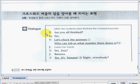Are you all finished? Students, yes. Teacher, let's check the answers. Who can tell us what number 3 down is? And then Gina raises her hand. Teacher said, Yes, Gina. Gina said, Banana. Okay, and teacher said, Yes, it's banana. Right, everybody?